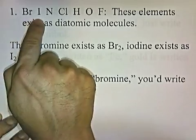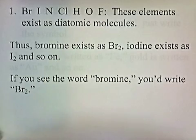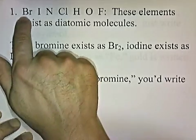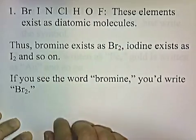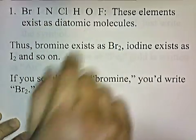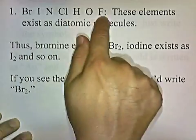Bromine, iodine, nitrogen, chlorine, hydrogen, oxygen, and fluorine — these elements exist as diatomic molecules. Thus, bromine exists as Br2, iodine exists as I2, and so on. So if you see the word bromine, you'd write Br2. To memorize this list, you might notice they spell out the word Brinkelhoff. If you can remember the word Brinkelhoff, you'll have memorized the elements that exist diatomically in nature.